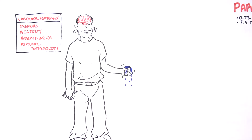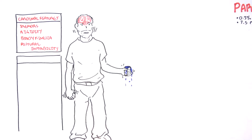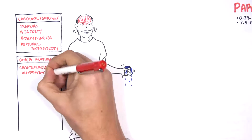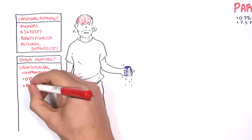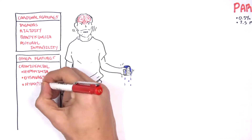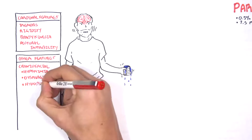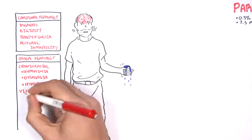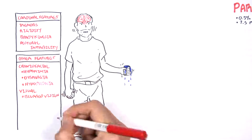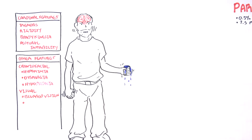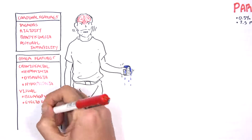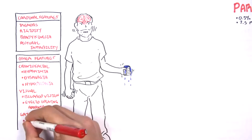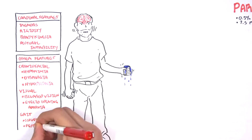There are other features which affect the craniofacial areas, which include hypomimia — basically a decrease in facial expression — dysphagia, and hypophonia, which is a reduction in the tone and volume of the voice. Other features include visual problems such as blurred vision and eyelid opening apraxia. Gait features include shuffling, festinations, and freezing.